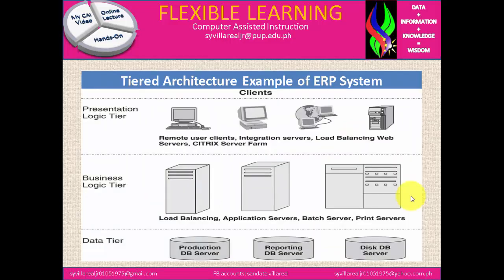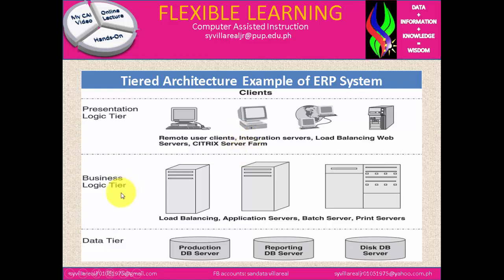Next, we have the tiered architecture example of an ERP system. When we say tiered, it is connected like a wired network. The first on the top is the client, and it represents three parts: the Presentation Logic tier, the Business Logic tier, and the Data tier. Under the Presentation Logic tier, we have remote user client, integration server, load balancing web server, and Citrix server farm. Under the Business Logic tier, we have load balancing, application servers, batch server, and print servers. And the Data tier has production database server, reporting database server, and a disaster database server.